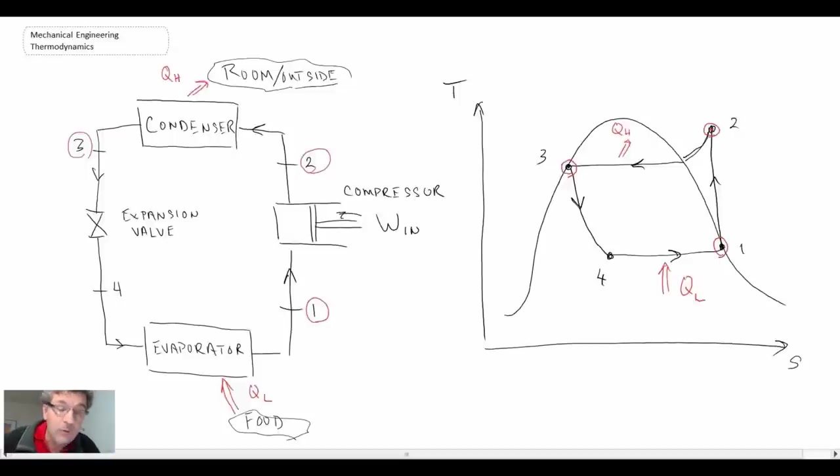We then go into a throttling or expansion valve, which is basically a process whereby we reduce the pressure. We model that as being a constant enthalpy process, and that takes us to state four.